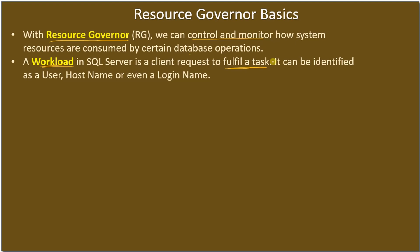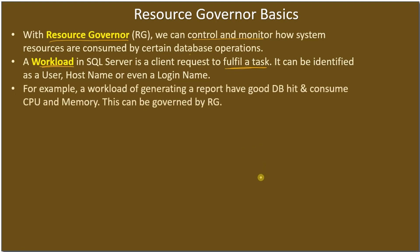Likewise, there may be another operation — for example, in some other store-related action people may do purchasing, which may come from a different host name. A workload can be a user, a host name, or a login name. For example, a workload of generating a report can have heavy database hits and consume CPU as well as memory — this can be governed by Resource Governor.